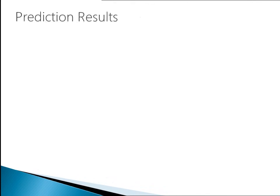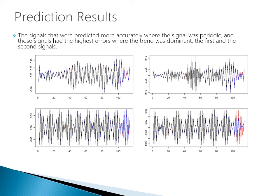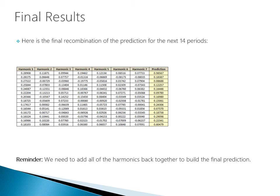Here is the final recombination of the prediction for the next 14 periods. We had these different harmonic series, and since the Fourier transform is linear, we add them all together to get our final prediction. Taking the sum of each harmonic gives us our prediction, which we can bring back into the data frame using cbind, rbind, and our full suite of R tools to create comparison metrics between actual and predictive performance.